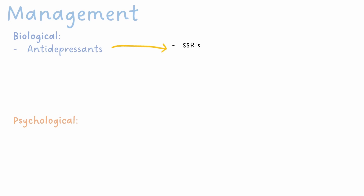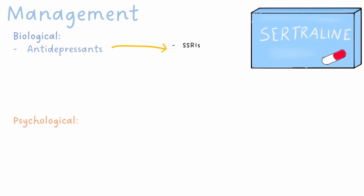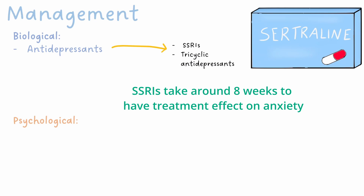Management of Generalised Anxiety Disorder can be split into biological and psychological components. Biological management involves the use of medications. Antidepressants are commonly used, such as serotonin-selective reuptake inhibitors, or SSRIs, like sertraline, as well as tricyclic antidepressants. SSRIs are commonly used as the first-line treatment for GAD. In anxiety, SSRIs take time to give a treatment response, usually around 8 weeks, compared to around 4 weeks for the management of depression. So it's important to explain this to patients if they are concerned about a lack of response to the medication.